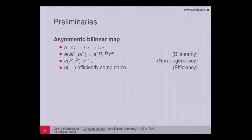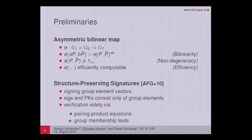Throughout this talk, we will need type 3 bilinear groups. I will denote the generator of group G1 by P and the generator of group G2 by P-hat. We will also talk about structure-preserving signatures, which are signature schemes defined on bilinear groups that allow us to sign group element vectors. Signatures and public keys are again group elements, and verification is done by evaluation of pairing product equations and group membership tests.